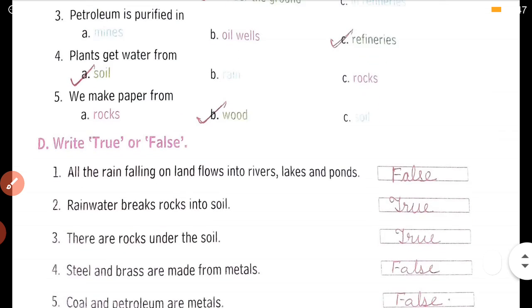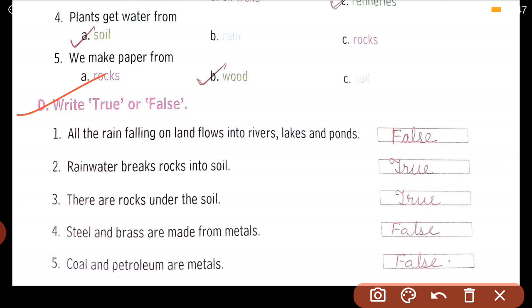One, all the rain falling on land flows into rivers, lakes, and ponds. It is false because some water goes under the ground also.